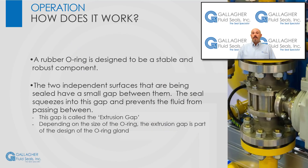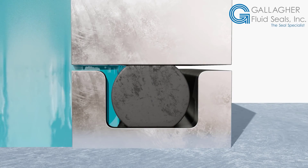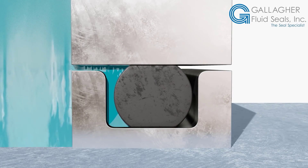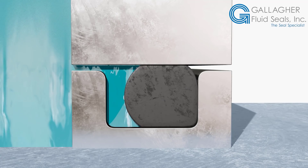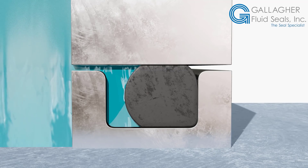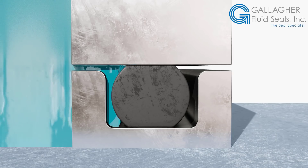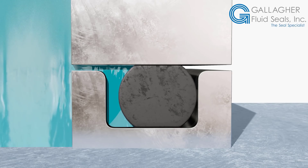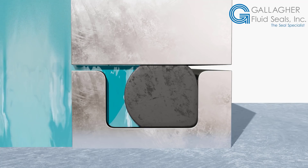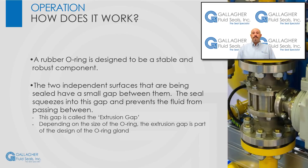So, how do O-rings work? A rubber O-ring is designed to be a stable and robust component. Whether by mechanical pressure from the surrounding structure or by pressure transmitted through hydraulic fluid, the O-ring is squeezed within the gland to produce zero clearance and block the flow. This squeeze alters the circular shape of the O-ring and is an intentional design characteristic. The two independent surfaces being sealed have a small gap between them, and the seal squeezes into this gap to prevent the fluid from passing through.